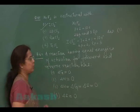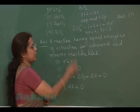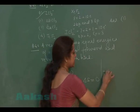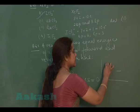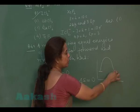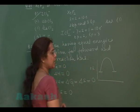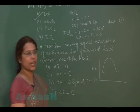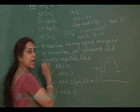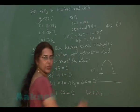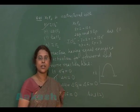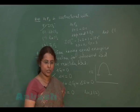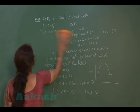Question 42: A reaction having equal energies of activation for forward and reverse reactions. If the reactant and product are at the same energy level and cross the same energy barrier, then the activation energy for the forward and backward reactions will be equal. For such a reaction, the enthalpy change (ΔH) will be 0. Therefore, the correct answer is option 2. We cannot say that ΔG = 0, so other options are incorrect.